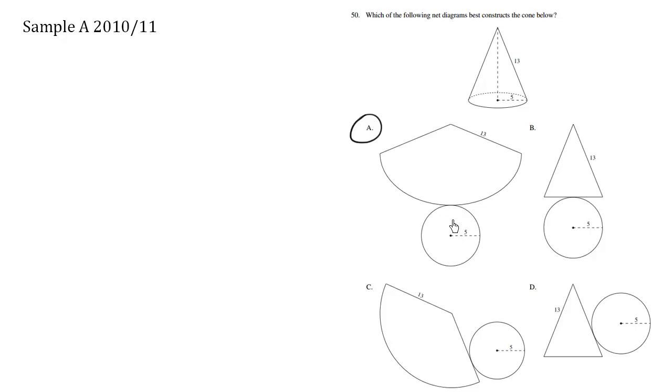The circle here should be in the middle, not on the side. And we can see that this circle here corresponds to the bottom of the circle here of this cone. The radius is 5, so it's a radius here, that makes sense.